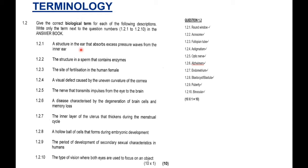1.2.1: A structure in the ear that absorbs excess pressure waves from the inner ear. Now, we must look at the structure in the ear that absorbs excess pressure waves. This question has come out a lot in the matric exams in the past few years. Please, can I ask that you make a note of this? We know that 1.2.1 is the round window. So, both those words, you ask the structure. So, you can't just say round. You have to say round window.